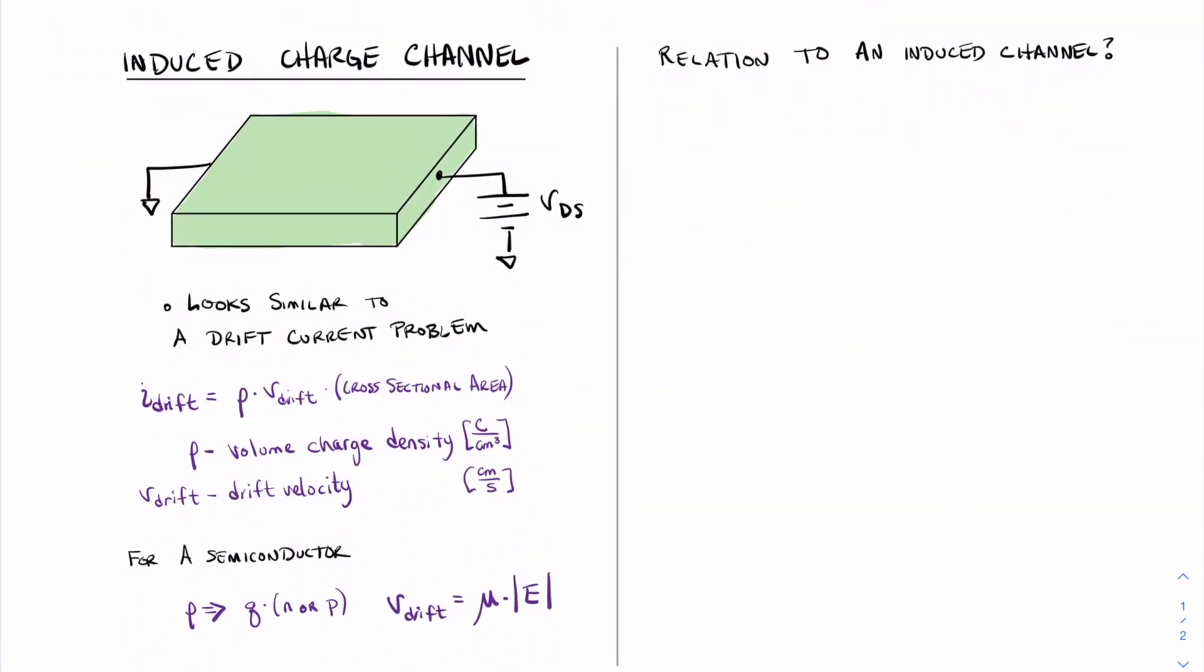So here in this picture, we can get an idea that this is very similar to a semiconductor resistor problem with an applied voltage where the current going through this device is drift current.